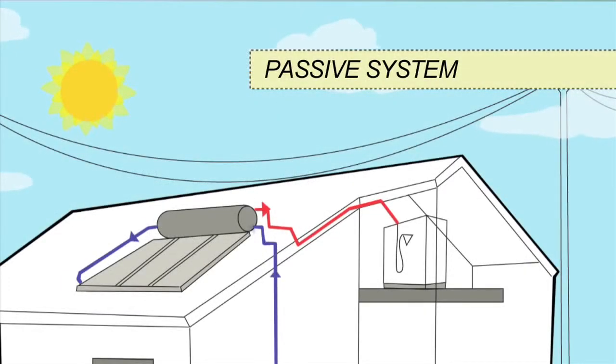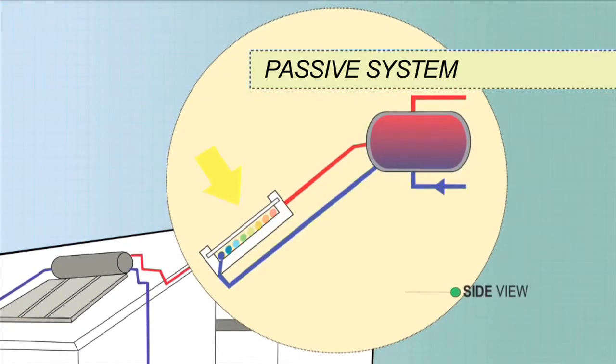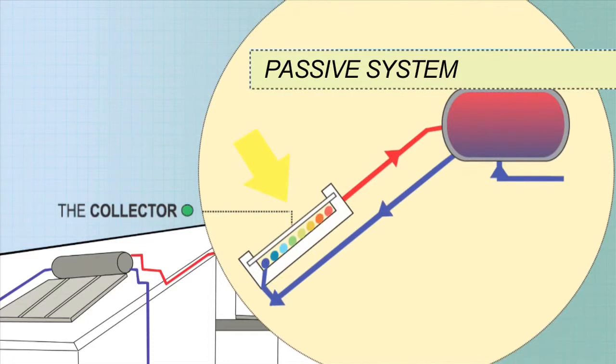In passive systems, also known as thermosiphon systems, the tank sits above the collectors. Cold water sinks into the collectors whilst warmer water rises unassisted from the collectors into the tank.